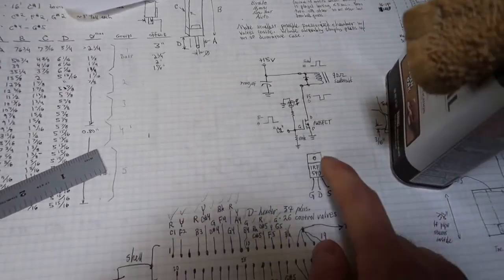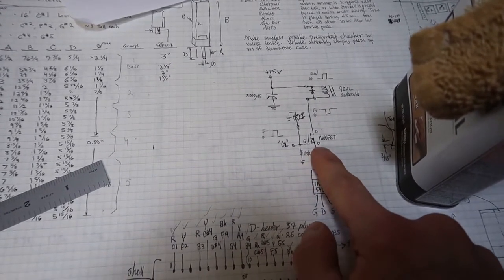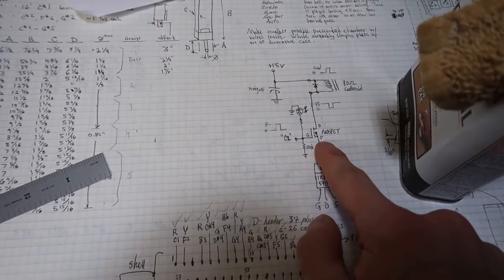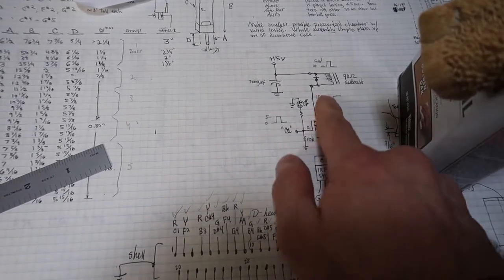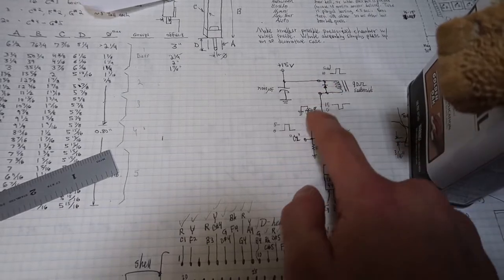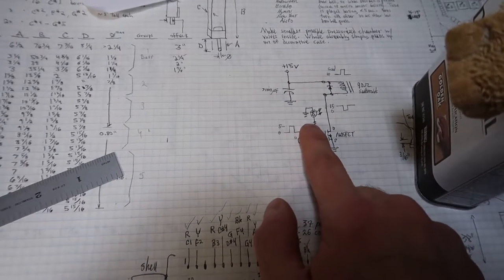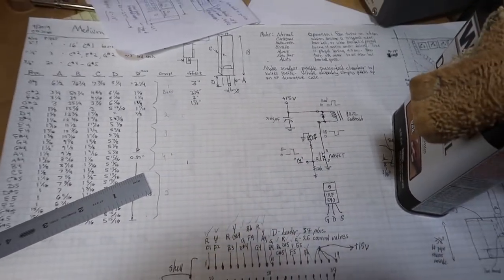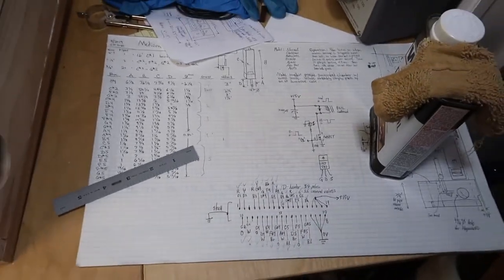And this is a circuit diagram showing the IRF 540 MOSFETs I used. The solenoids have a built in snubber diode there. I want to actually put LEDs to light up the pipes when a pipe is activated. I think that would be really cool.